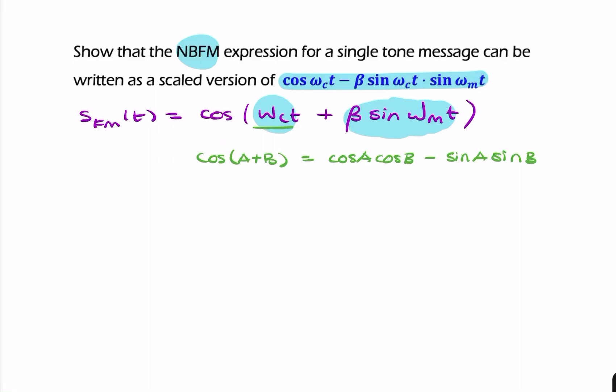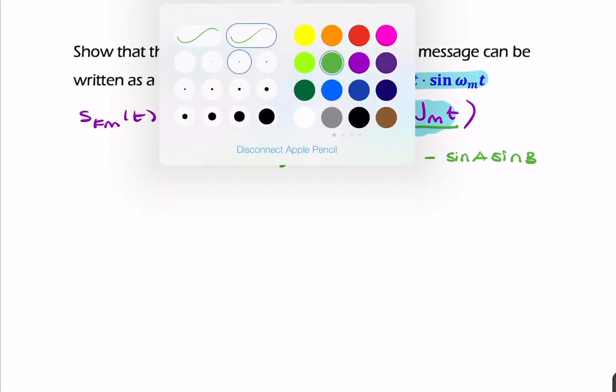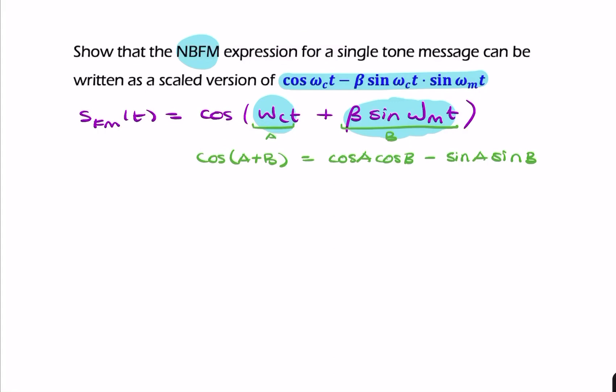If this term is my A and this term is my B, then my FM signal now looks like this: cos ωct multiplied by cosine of the whole B together, which is cos(β sin ωₘt).